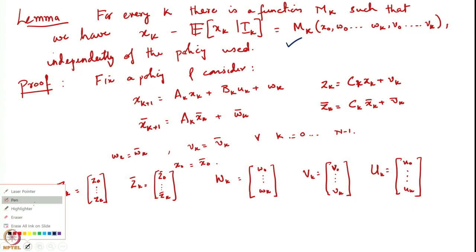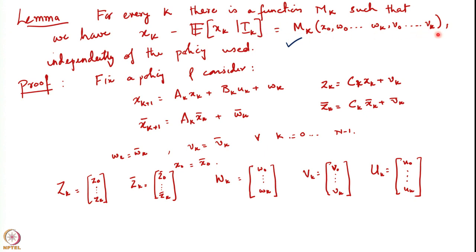In the previous lecture we established the lemma which showed that the error term between the state and the conditional expectation of the state given the information is a function of only the noise in the system, and this function does not depend on the policy that is being used. So it is independent of the policy.